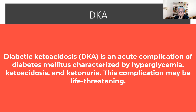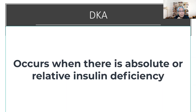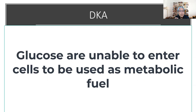Ketoacidosis means there is a presence of ketones, and there is going to be evidence of ketones excreted in the urine. It actually occurs when there is an absolute or relative insulin deficiency, which inhibits the ability of glucose to enter the cells to be utilized as metabolic fuel.